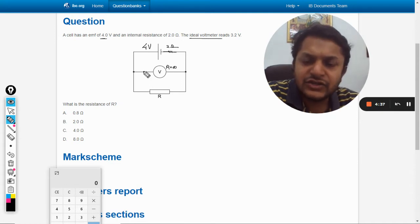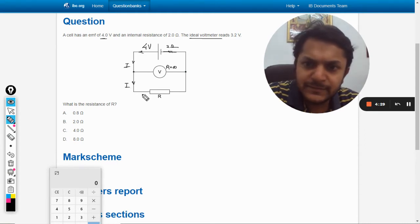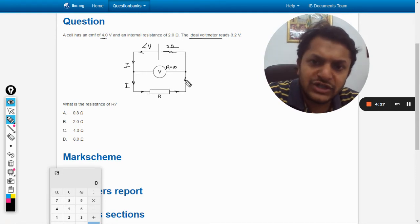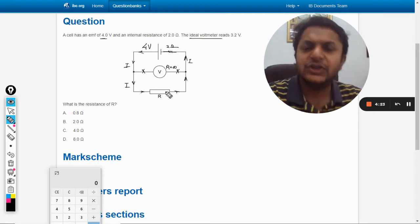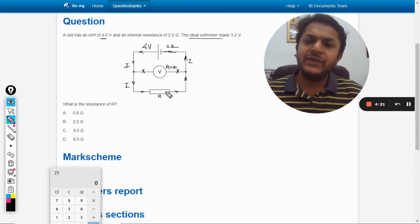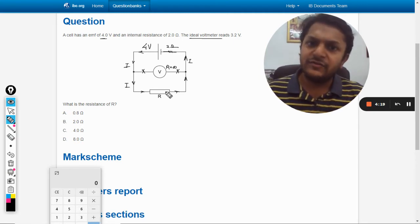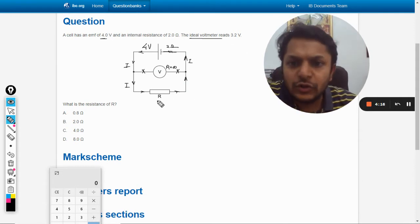So current will not be entering into this branch. Current will go like this, like this, and it will just bypass this point. So no junction rule will be applied here. In this branch and this branch, no current is flowing there, because this is the ideal voltmeter.